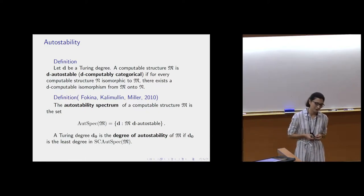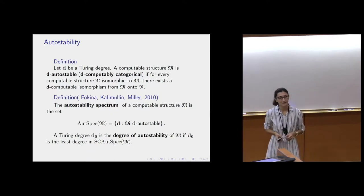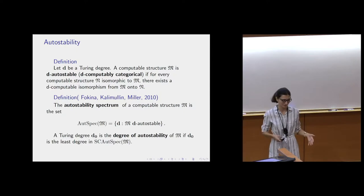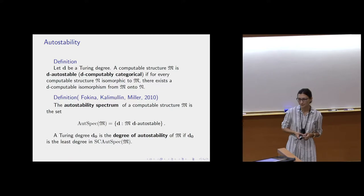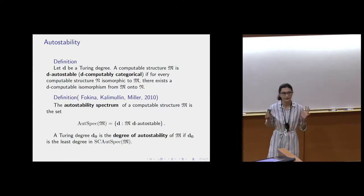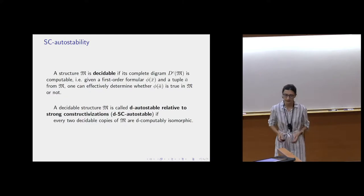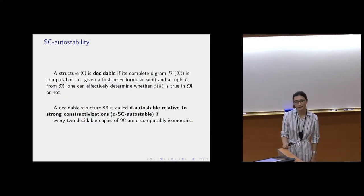The previous speaker already gave these definitions, but after the coffee break I will repeat them. Let D be a Turing degree. A computable structure is D-autostable if for any two computable copies of it there exists a D-computable isomorphism between them. Such structures are also called D-computably categorical. Fokina, Kalimullin, and Miller in 2010 introduced the notion of the auto-stability spectrum: the set of all Turing degrees D such that the structure is D-autostable. If there exists a least degree in this spectrum, we call it the degree of auto-stability.